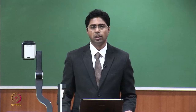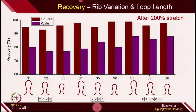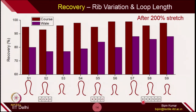Let's go back to recovery. Looking at rib variation and loop length variations, not much difference was observed. Especially in the course direction, recovery was much, much better. After 200% extension I observed almost 90–95% recovery across all fabric samples — whether 1×1, 2×2, or 3×3, all changing loop length. But in the wale direction, the recovery was poor compared to the course direction.